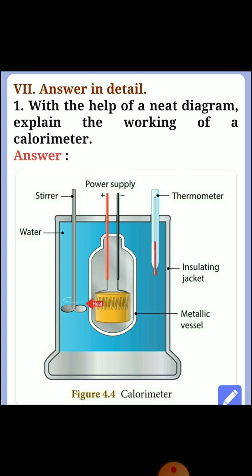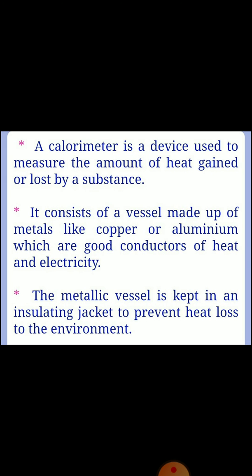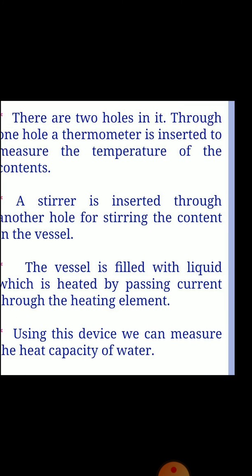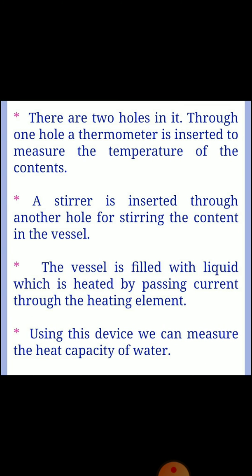The calorimeter has an insulating jacket and a metallic vessel. A calorimeter is a device used to measure the amount of heat gained or lost by a substance. It consists of a vessel made of metals like copper or aluminum, which are good conductors of heat and electricity. The metallic vessel is kept in an insulating jacket to prevent heat loss to the environment. There are two holes: through one hole a thermometer is inserted to measure temperature, and a stirrer is inserted through another hole. The vessel is filled with liquid which is heated by passing current through the heating element. Using this device we can measure the heat capacity of water.